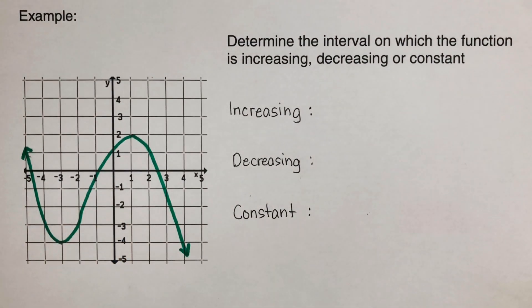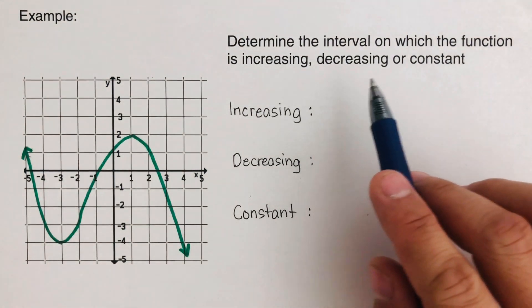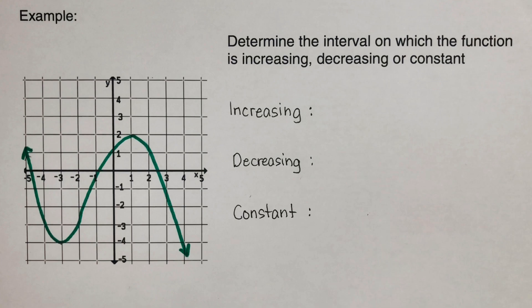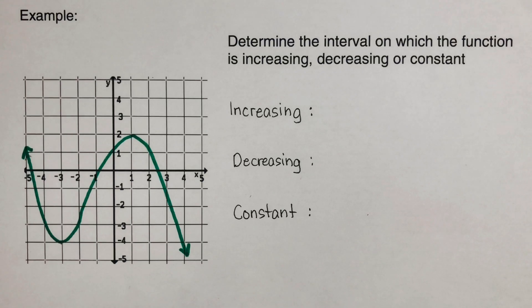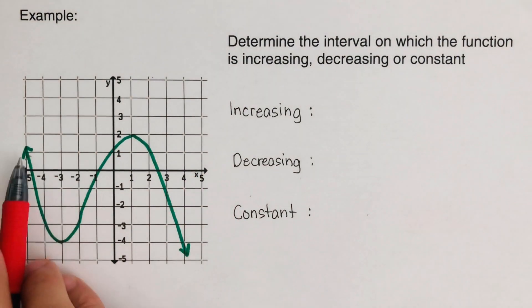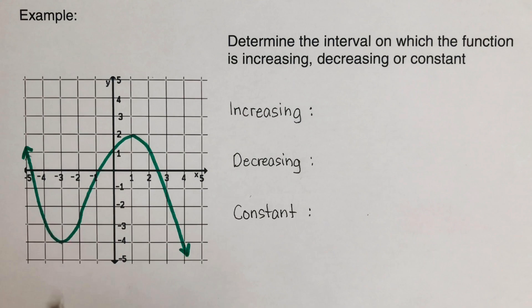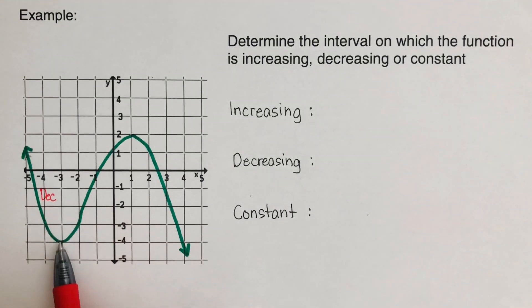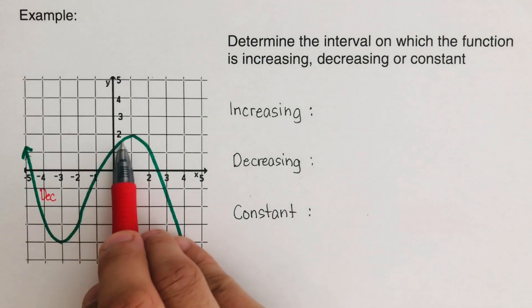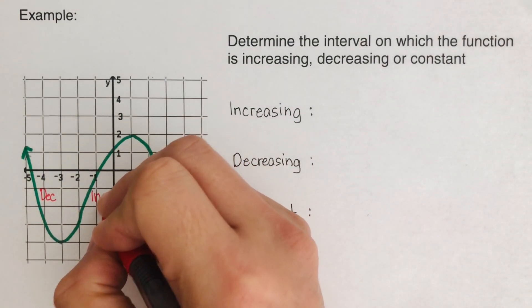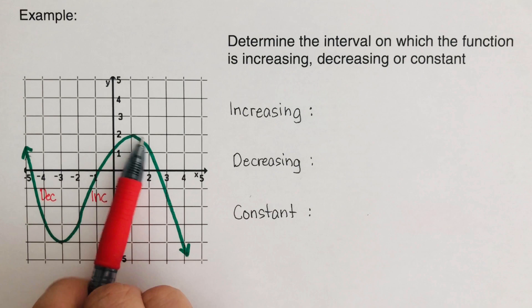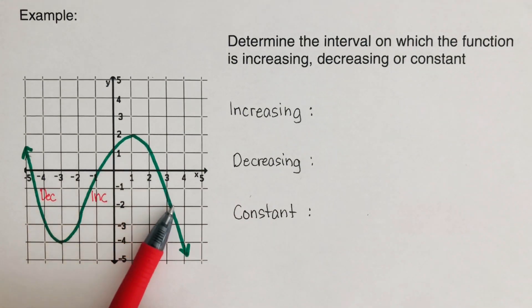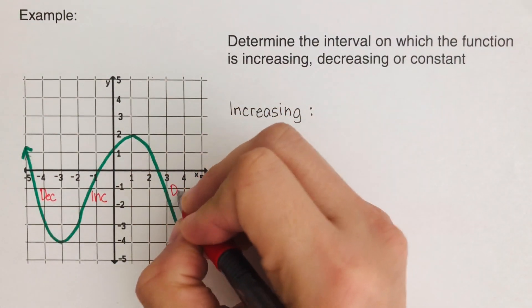Now let's look at this next example. We're given a graph and need to determine on which intervals the function is increasing, decreasing, and constant. Tracing from left to right: the first section goes downhill — decreasing. Then it goes uphill — increasing. Then the next section goes downhill again — decreasing.